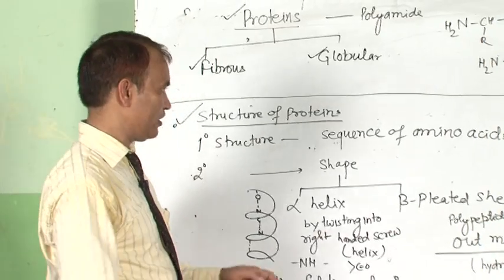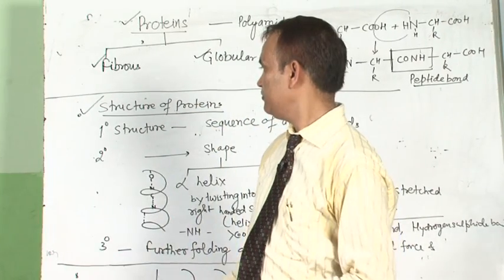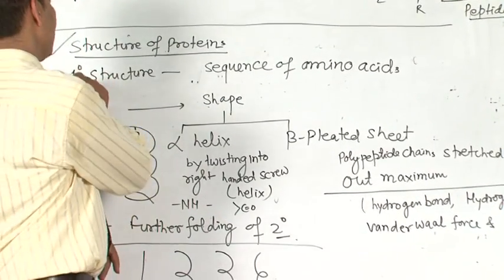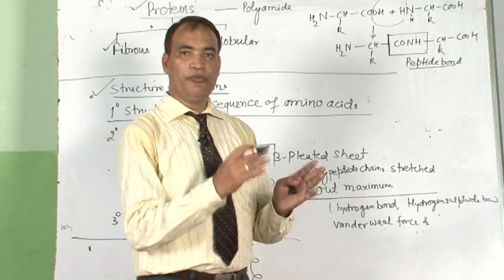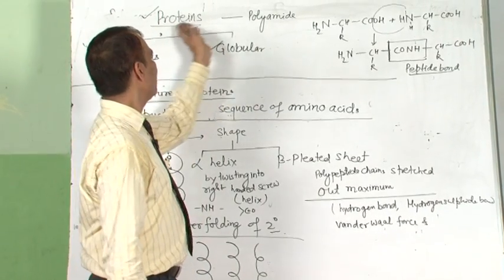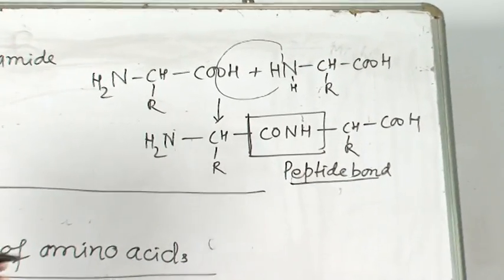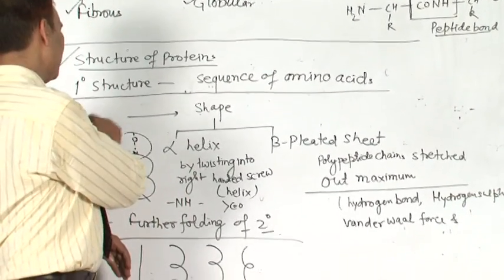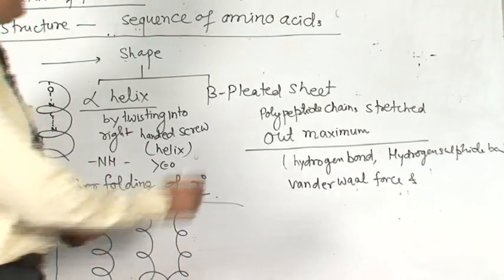The structure of proteins — we study three levels: primary, secondary, and tertiary. The primary structure relates to the sequence of amino acids in the polypeptide chain — how the amino acids are linked together. The secondary structure relates to the shape. There are two types: alpha-helical structure (alpha helix) and beta-pleated sheet structure.